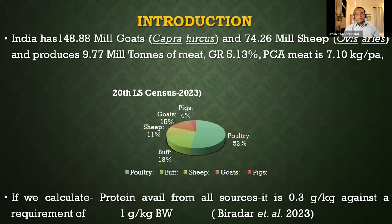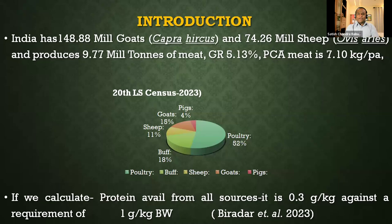Globally, countries like China and the USA have per capita meat consumption of 45–50 kg or even higher. So we have a lot of work to do — we can take our production to almost 8 to 10 times more. That much potential is there.